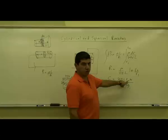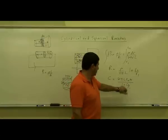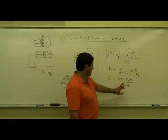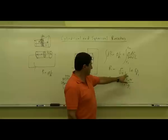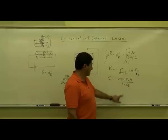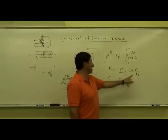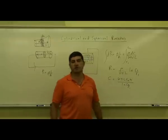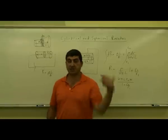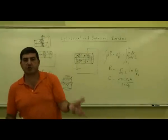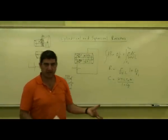Compare this to the cylindrical capacitor formula, which had ε₀, 2π, and L in the denominator, with ln(r2/r1) on top. Here for the resistor, we have ρ on top and 2πL in the denominator, but ln(r2/r1) is also on top. So the resistor acts opposite to how the capacitor acts.